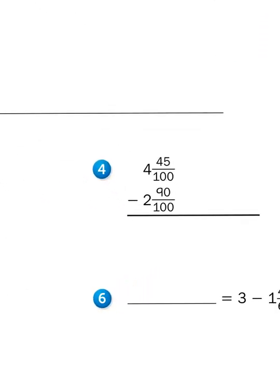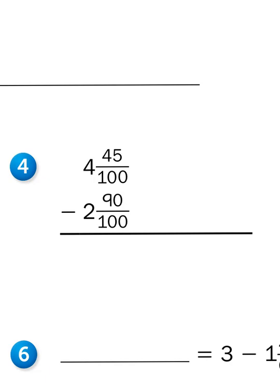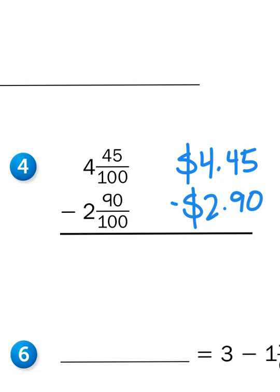Problem number four is set up vertically for us, so that makes it easy. I'm going to subtract 4 and 45/100 minus 2 and 90/100. Again, this could be translated into dollars and cents if you wanted to. So you have four dollars and forty-five cents, and you're going to subtract two dollars and ninety cents. Just like I did in the previous problem, I'm going to first look at the hundredths place value. I have enough hundredths. Five minus zero is five. I don't have enough dimes or tenths in my tenths place value, so again, I've got to borrow a one or a whole, making four dollars into three dollars, and four dimes into fourteen dimes or fourteen-tenths. Fourteen minus nine is going to give me five. I'm going to bring down that decimal point. And then three minus two is one.